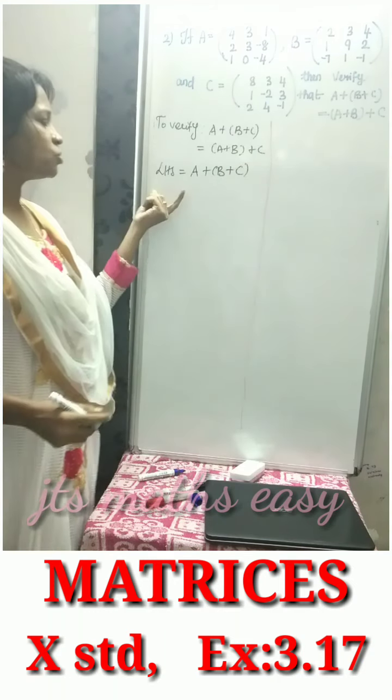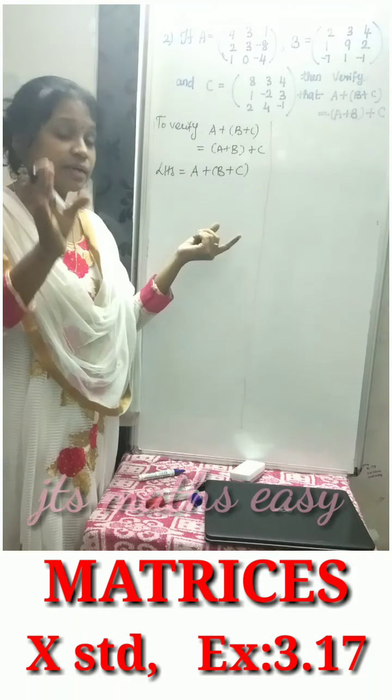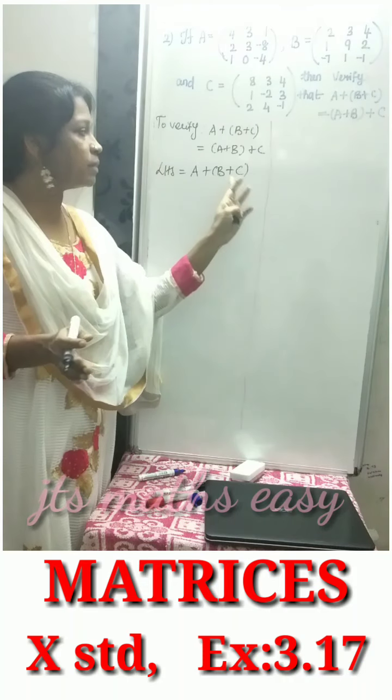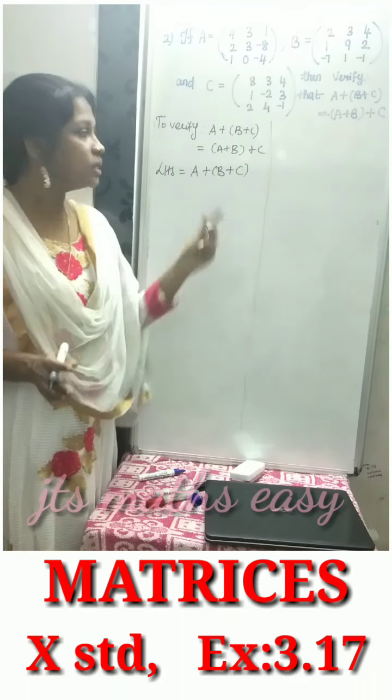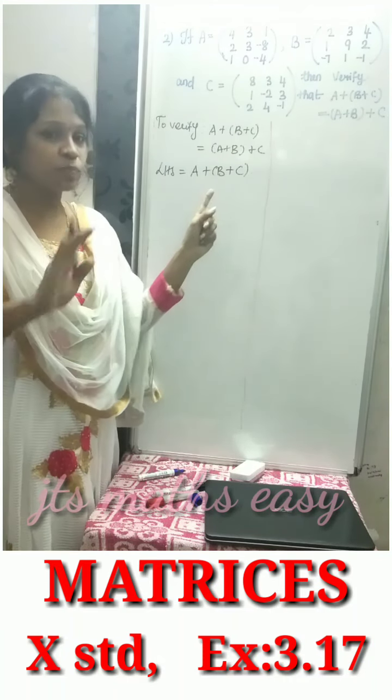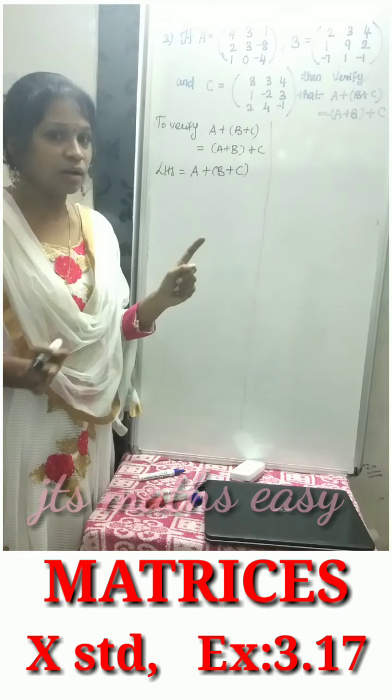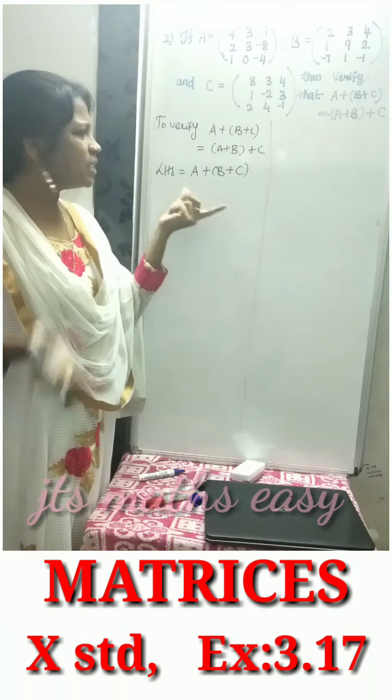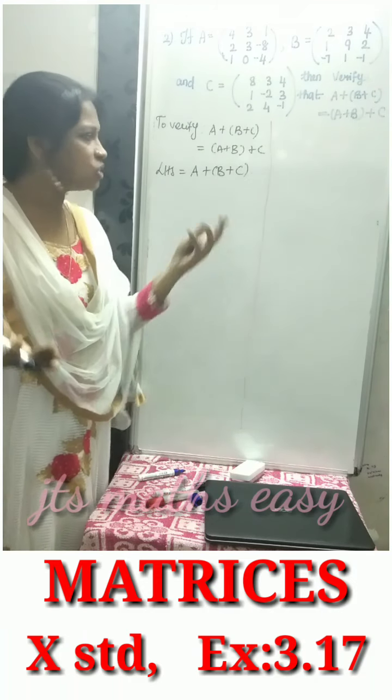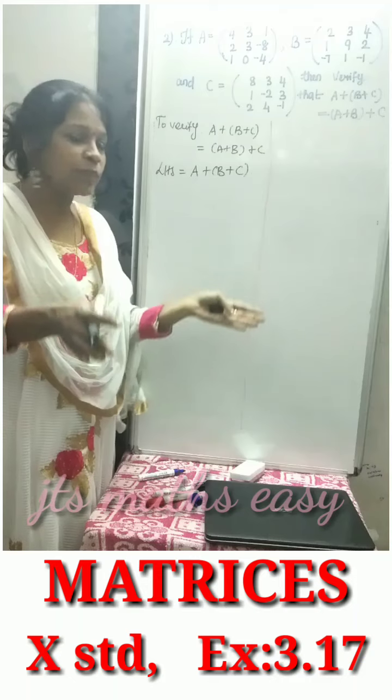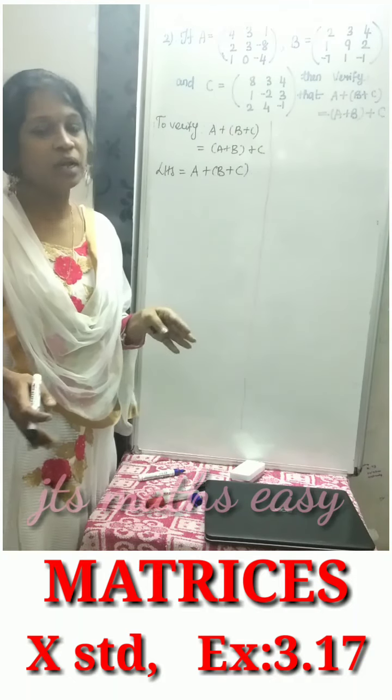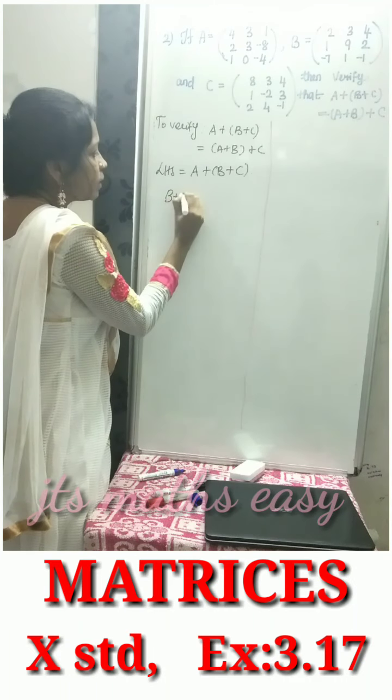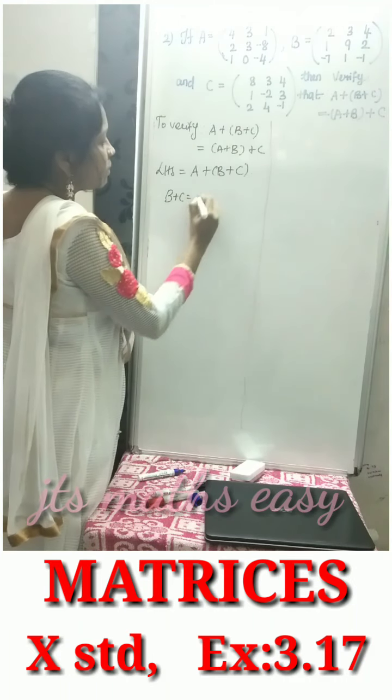A plus B plus C. First solve the bracket term, so solve B plus C. Matrix B is 2, 3, 4, 1, 9, 2, minus 7, 1, minus 1.